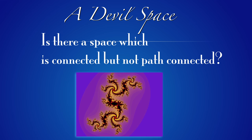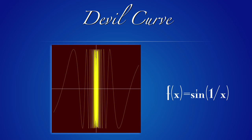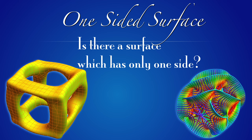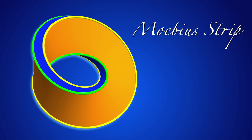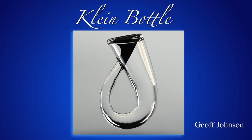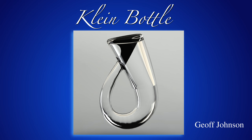Is there a space which is connected but not path-connected? We have not distinguished between connectivity and path-connectedness in the introduction slides, but connected means that we cannot split the space into two open subsets. The simplest example is the graph of the function f(x) = sin(1/x). Is there a surface which has only one side? The answer is yes — it is the Möbius strip we have already seen in the Escher picture. But there is another example: the Klein bottle. Here is a picture by Geoff Johnson, an artist. This is the end of this Strange World presentation.